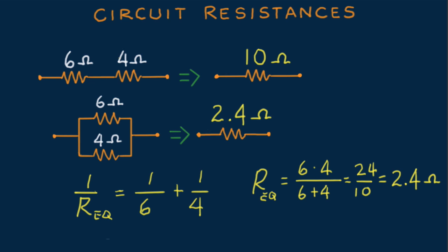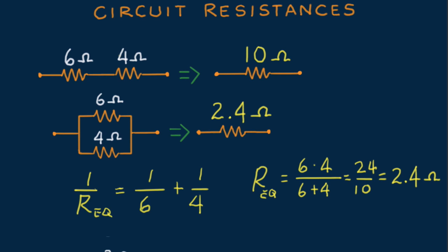Now never mind that the 2.4 ohms has an extra significant figure compared with the 6 and the 4 ohm resistors. At this stage we'll put this kind of numerical accuracy in the back seat. The idea to learn is that the voltage source sees a pair of resistors as a single one: 10 ohms when in series and 2.4 ohms when in parallel.